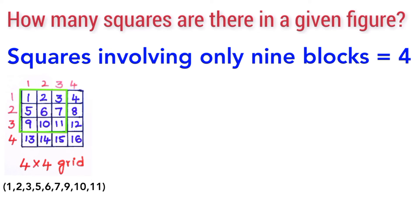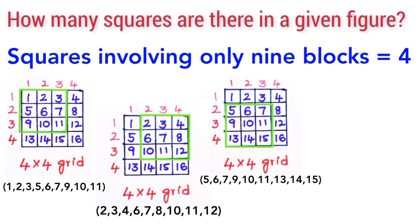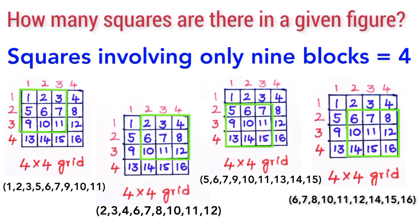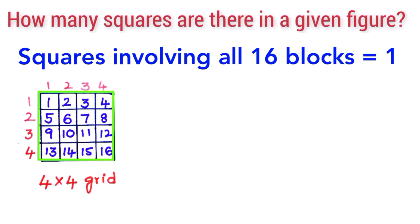Now let us see the square grid combinations which involve only 9 blocks — that is, 3×3 squares. The combinations are: {1,2,3,5,6,7,9,10,11}, {2,3,4,6,7,8,10,11,12}, {5,6,7,9,10,11,13,14,15}, and {6,7,8,10,11,12,14,15,16}. Together, these give us 4 squares which involve only 9 blocks.